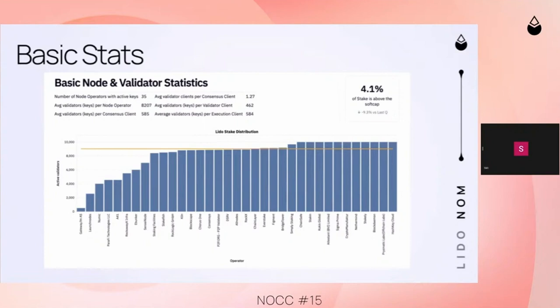This chart shows the active validators per node operator. The orange line is what we call our soft cap — this represents 1% of all active validators on the entire network. The goal is to get each individual node operator to a point where they are running less than 1% of this soft cap. Withdrawals were made possible in May with the LIDO V2 upgrade, and you can see some node operators are still running above the soft cap and some below it.